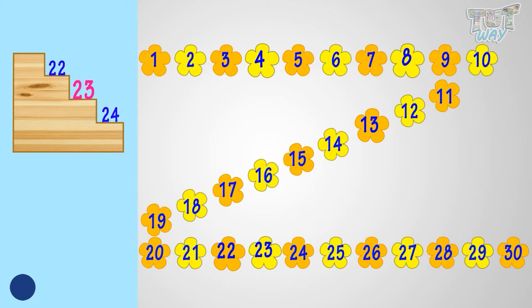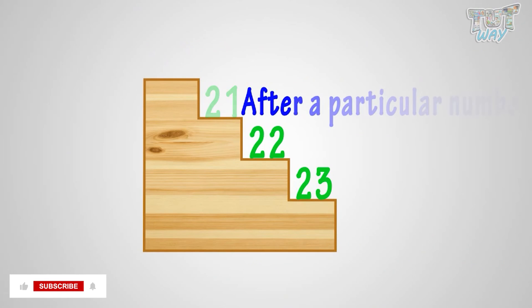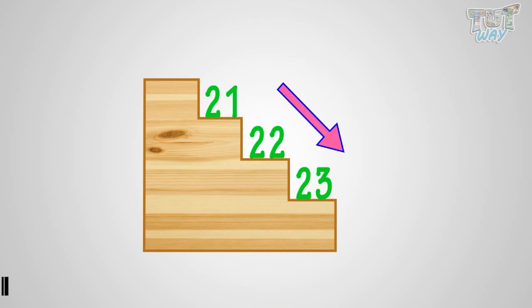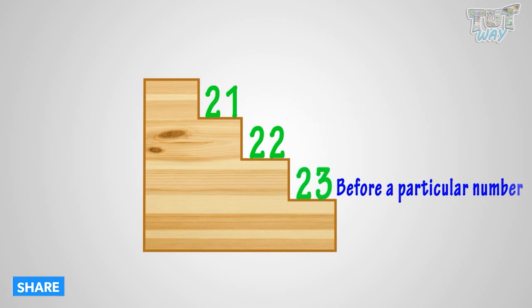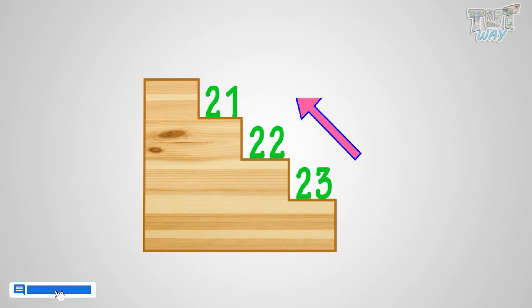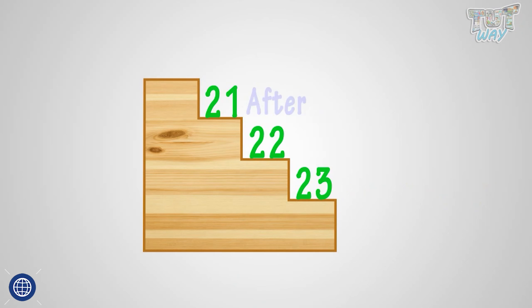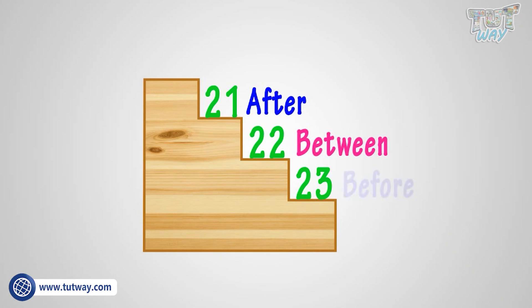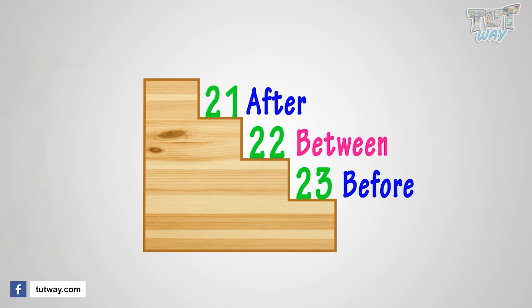Yeah! My design is complete again. So we have learned that to find a number that comes after a particular number, count forward. And to find a number that comes before a particular number, count backward. This way you can find numbers that come after, between, or before a particular number.